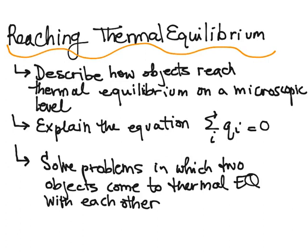You should be able to explain the equation sigma-Qi equals zero, what that equation means, and where it comes from. And you should also be able to solve problems in which two objects come to thermal equilibrium with each other — that is, one is hot, one is cold, and by the end, they come to be the same temperature.